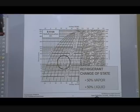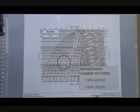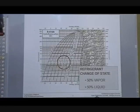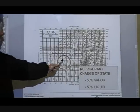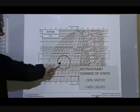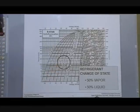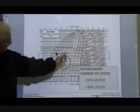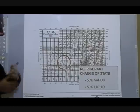50 percent liquid, 50 percent vapor occurs about halfway through your condenser, or you could say halfway through your evaporator — half liquid, half vapor, the job is not done. If you never proceed beyond that point, you've got problems in your system, something's not right. The pressure-enthalpy diagram helps us understand the concept of what's happening inside the system.